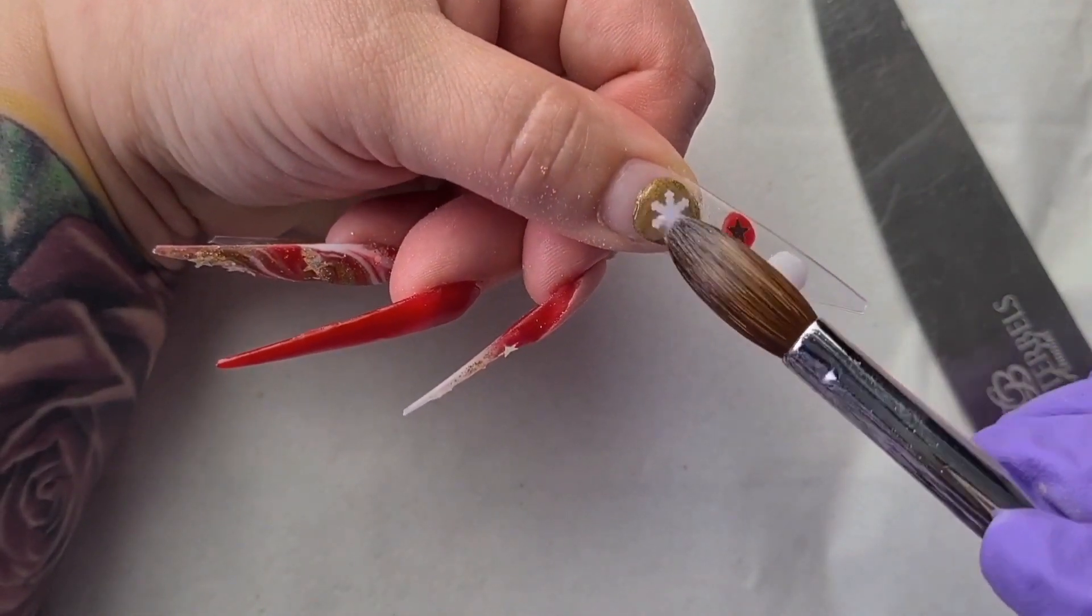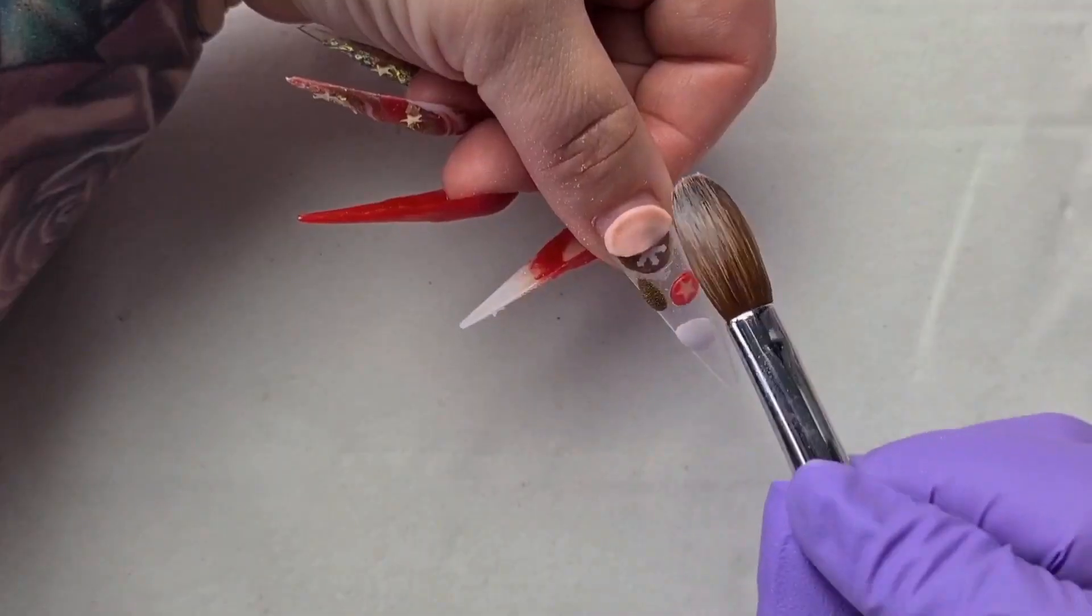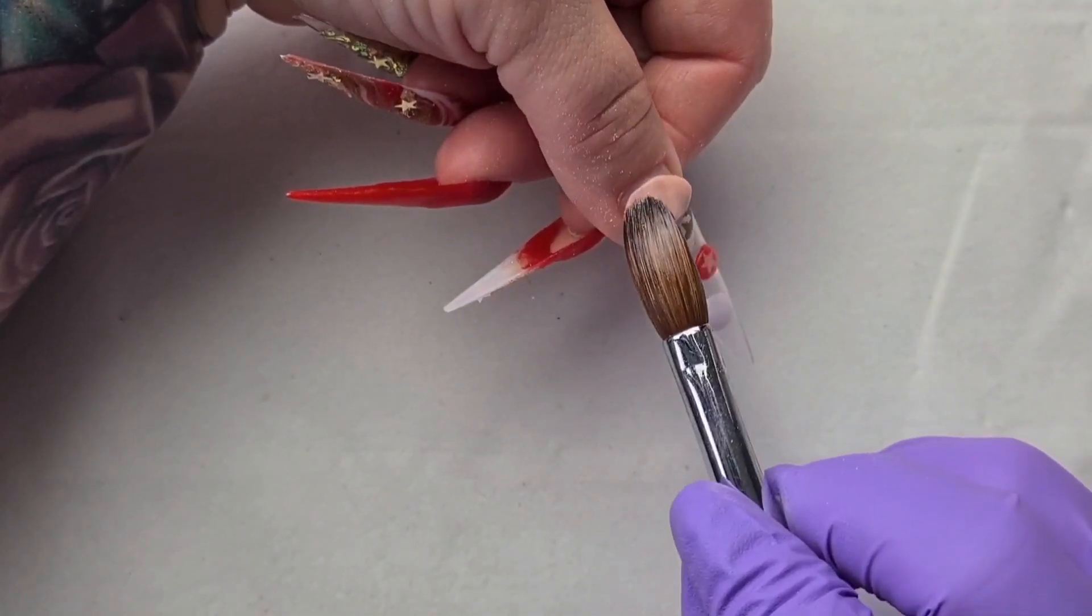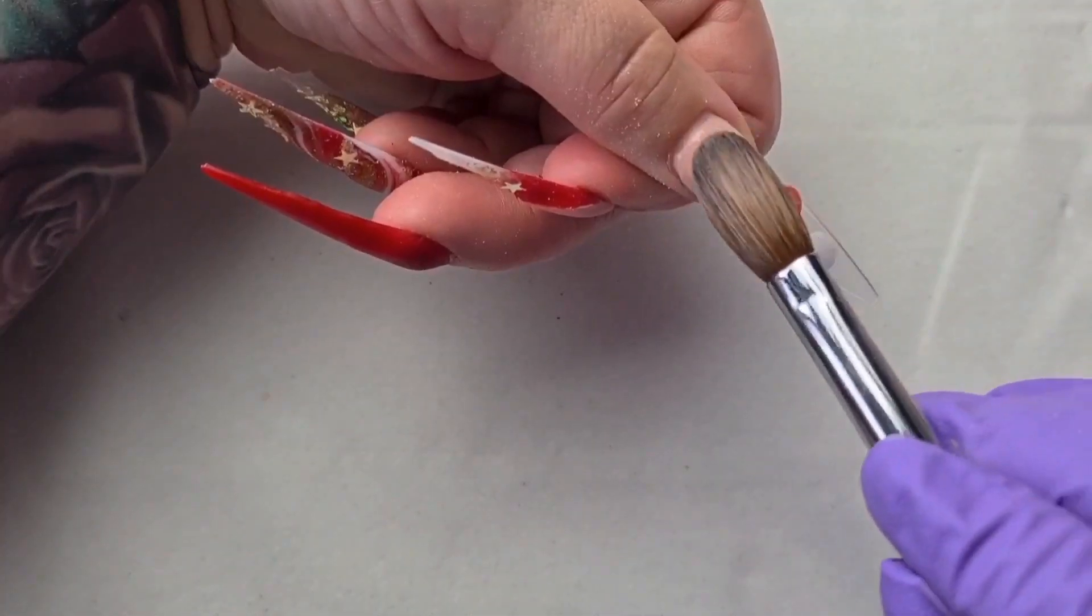As you can see I'm capping the little bubbles with clear acrylic and then I will file the side down. And here I'm adding the peach of a cover all over my nail.